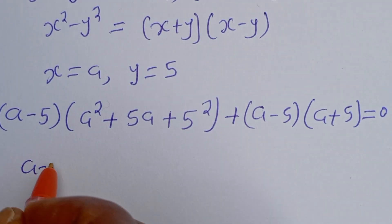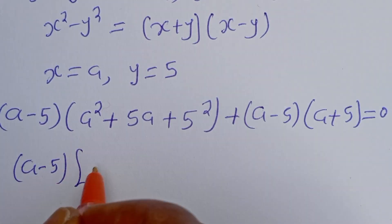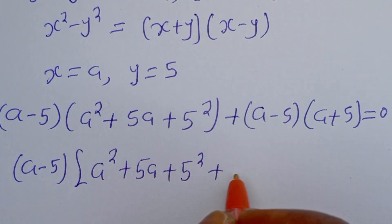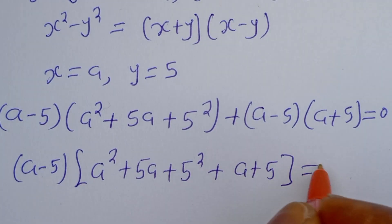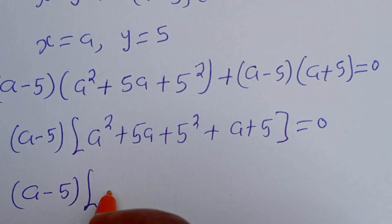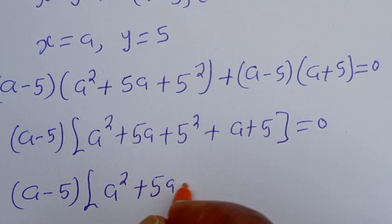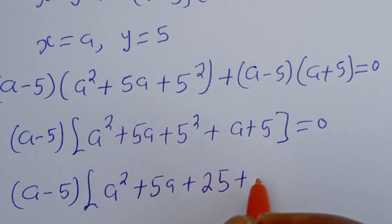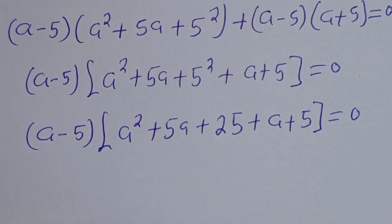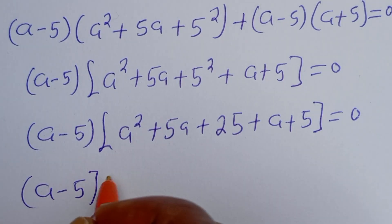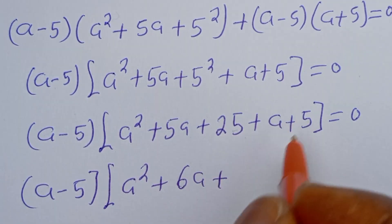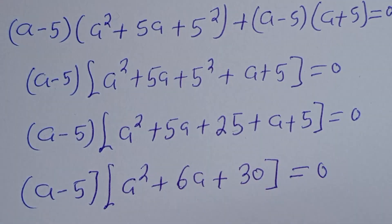We have (a minus 5) times the bracket a squared plus 5a plus 25 plus (a plus 5) equal to 0. Then this is (a minus 5) times (a squared plus 5a plus 25 plus a plus 5) equal to 0, which simplifies to (a minus 5)(a squared plus 6a plus 30) equal to 0.